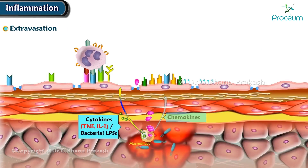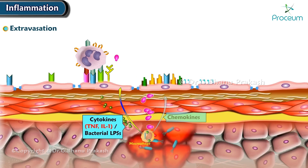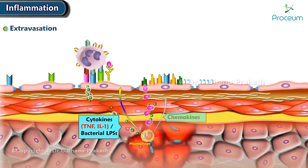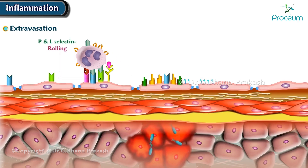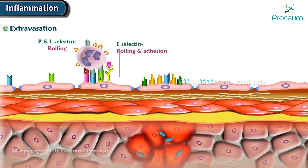TNF and IL-1 act on endothelial cells. P- and L-selectin are involved in rolling, while E-selectin plays a key role in both rolling and adhesion.